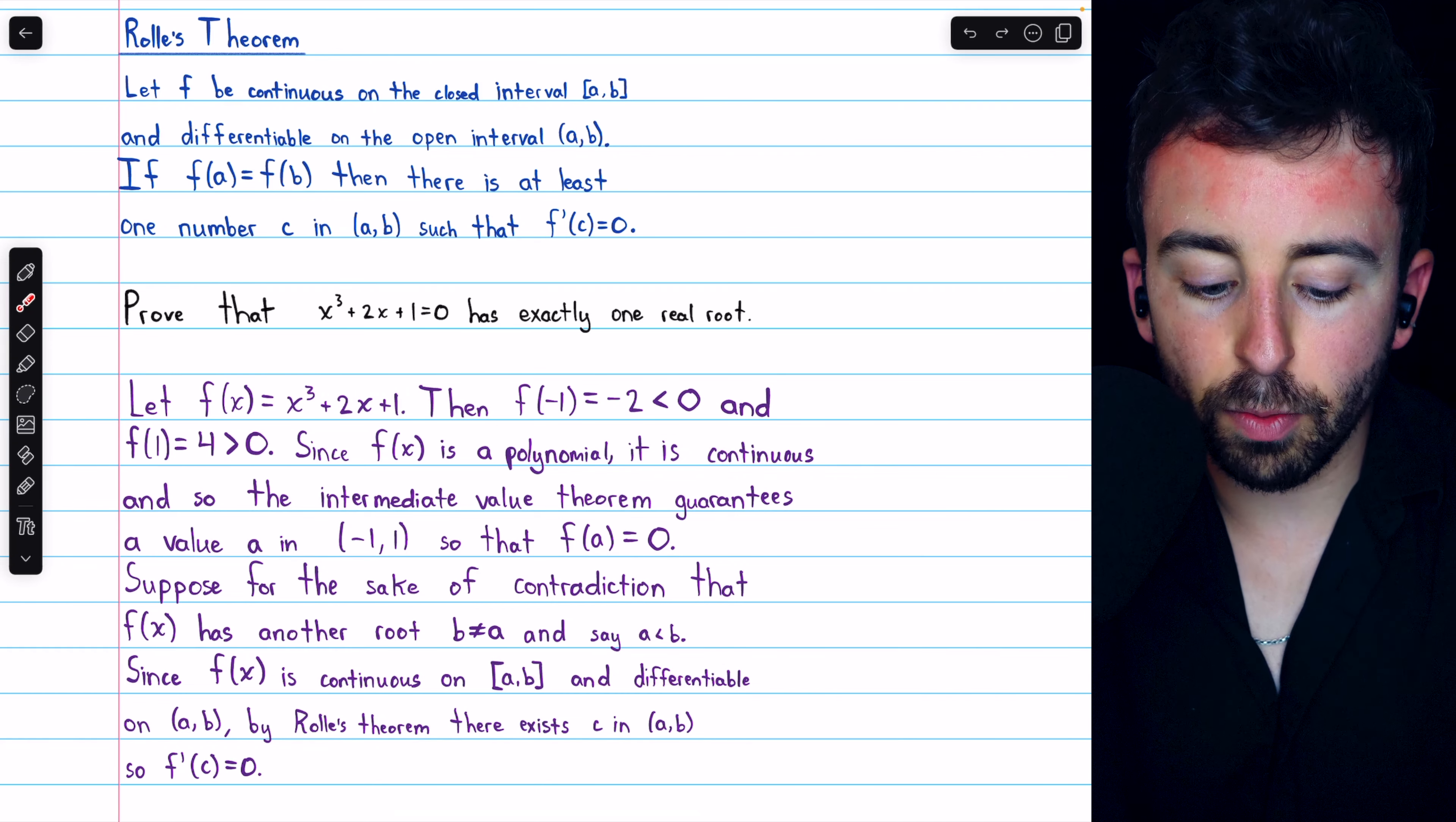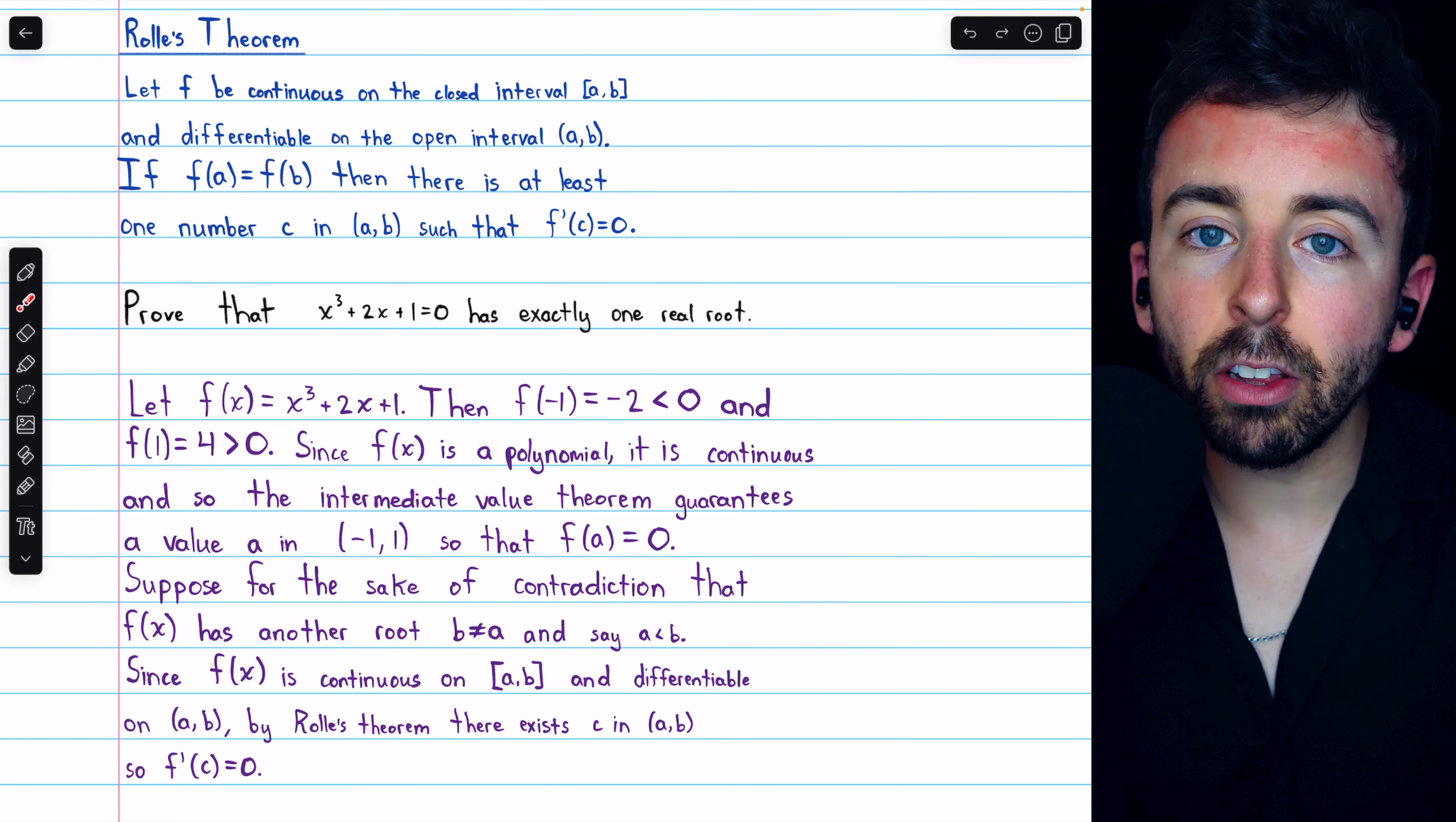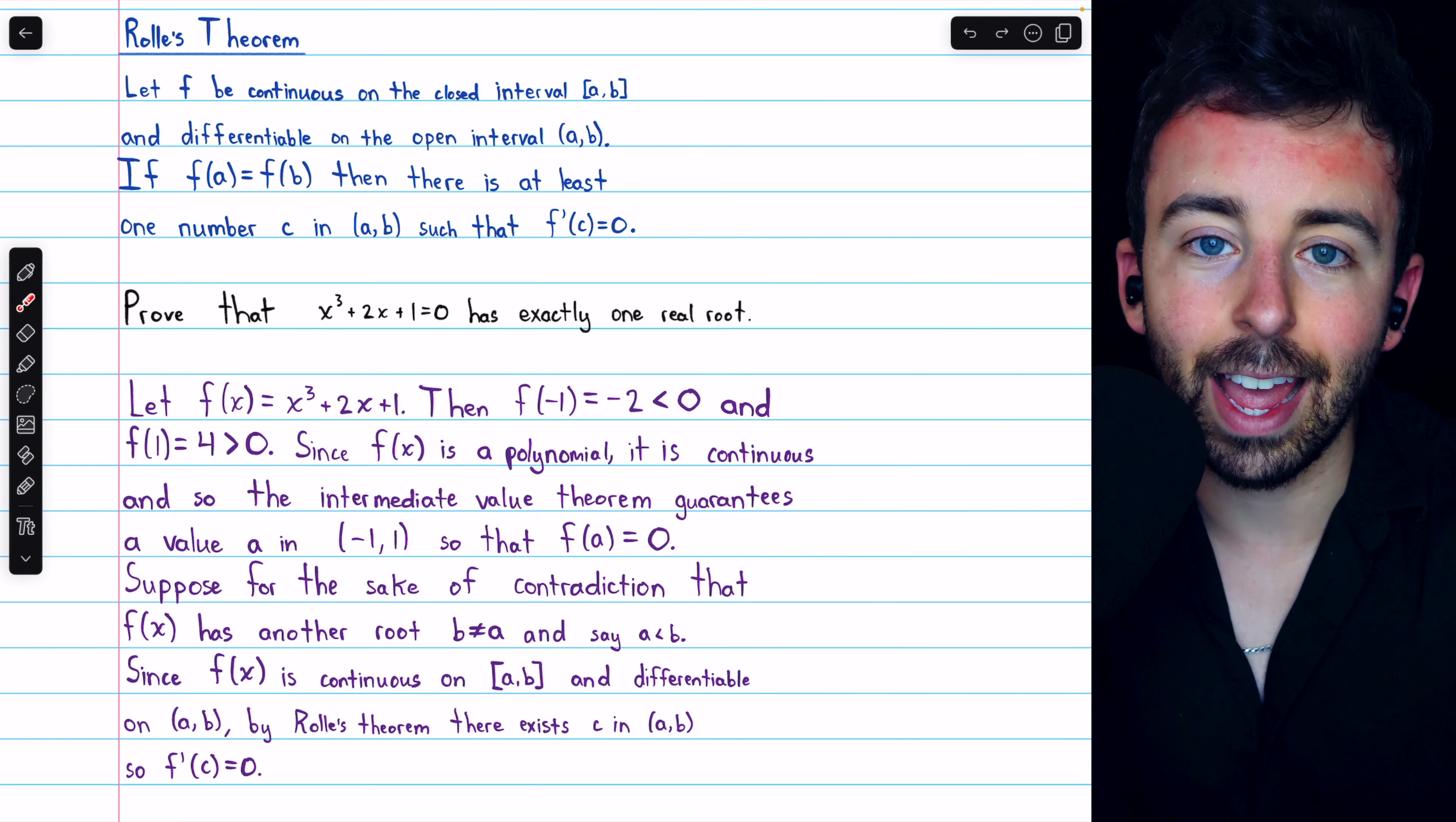We also know that it's differentiable on the open interval from a to b, because again, it's a polynomial. And so, Rolle's theorem applies. We've got continuity, we've got differentiability, and we know that the value of the function is the same at a and at b. The values of the function at the endpoints of this interval are the same, because it's zero at the beginning and at the end. They are roots.